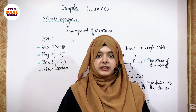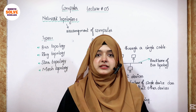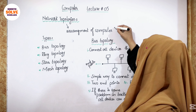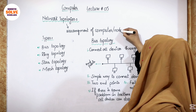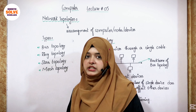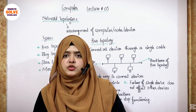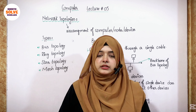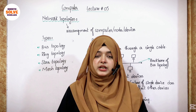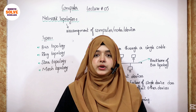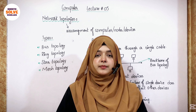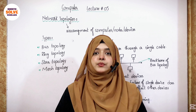First of all, if we look at our title, one term that we have to understand is topology. What is topology? Topology is simply called the arrangement of computers. We use 2-3 words for it: arrangement of computers, arrangement of nodes, arrangement of devices, etc. We arrange devices within a network. This is called network topology. Network topology means arranging multiple devices within a network to communicate.